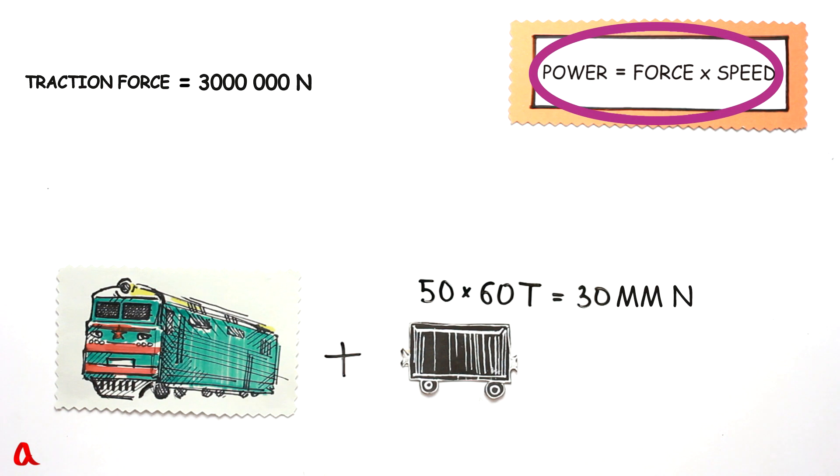Power is force multiplied by speed. If the train's speed is 20 meters per second, its power is going to be 6 million watts. This is exactly the power that an electric freight locomotive VL-80 has.